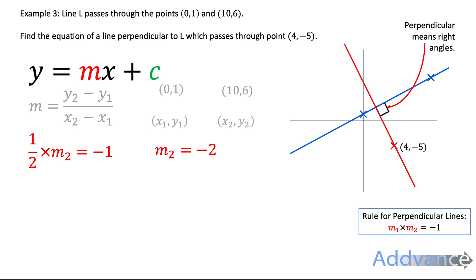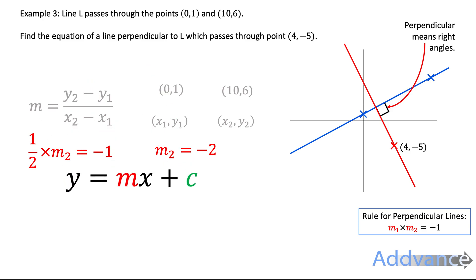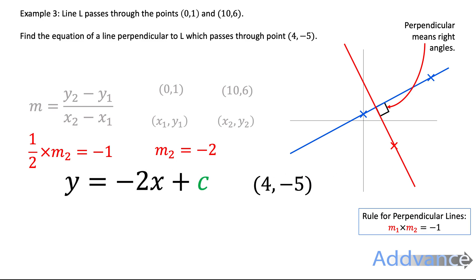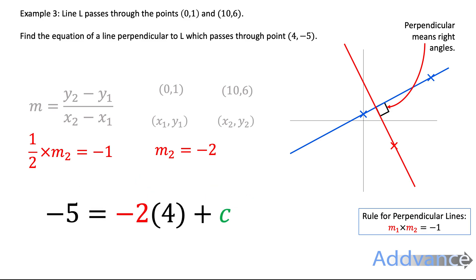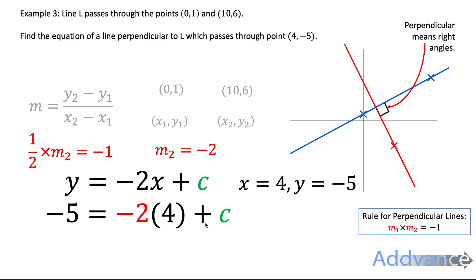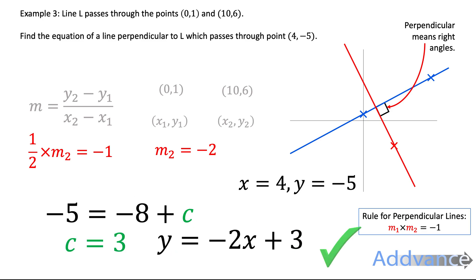Now we find c. We write y equals minus 2x plus c and substitute the point (4, minus 5): minus 5 equals minus 2 times 4 plus c, so minus 5 equals minus 8 plus c. Adding 8 to both sides gives c equals 3. The y-intercept is 3, so the equation of the perpendicular line is y equals minus 2x plus 3.